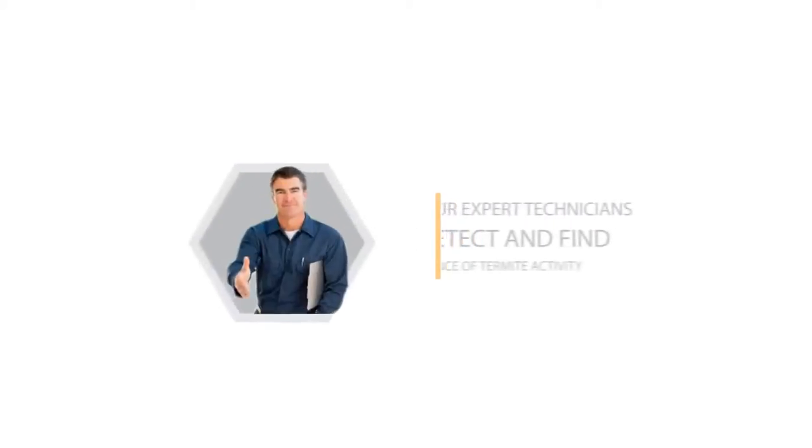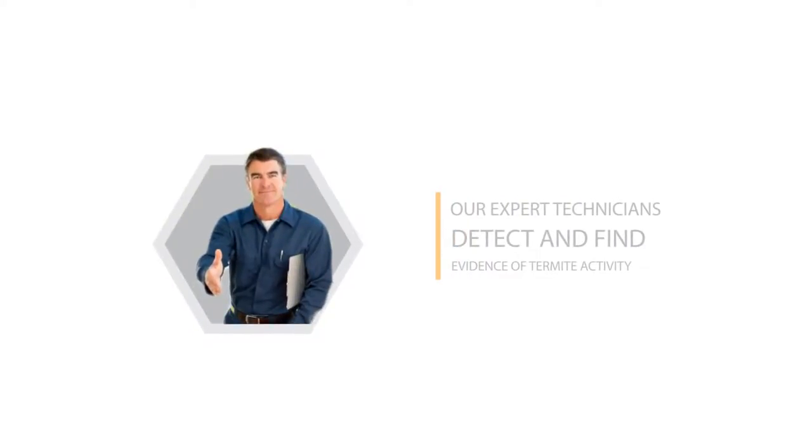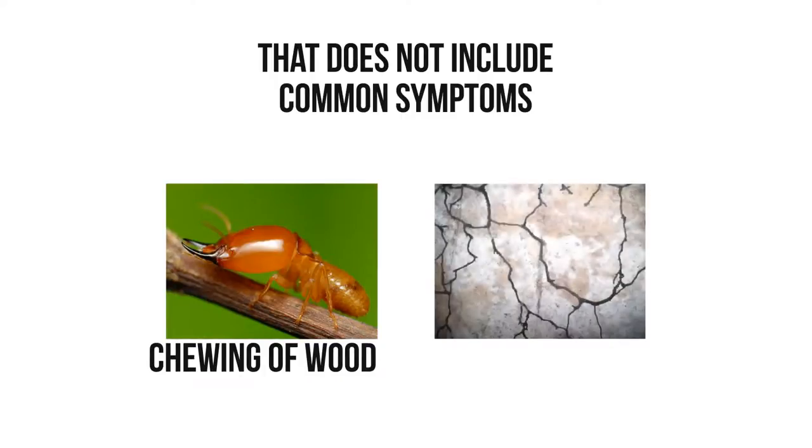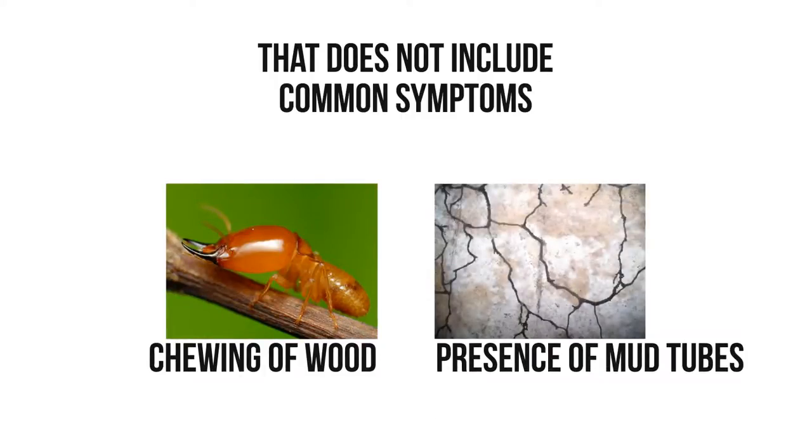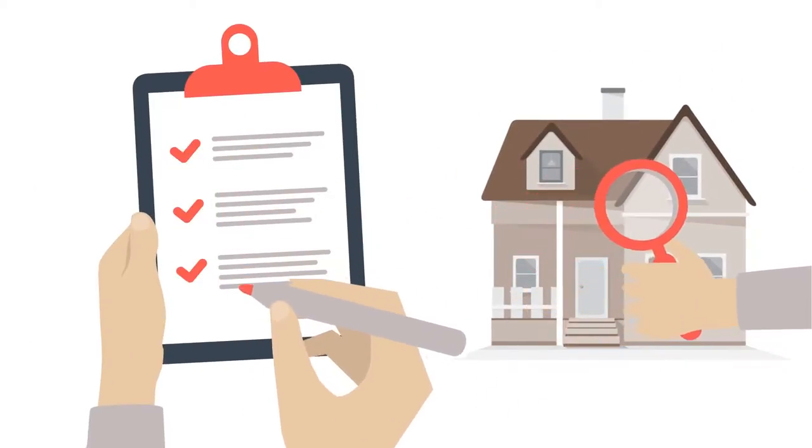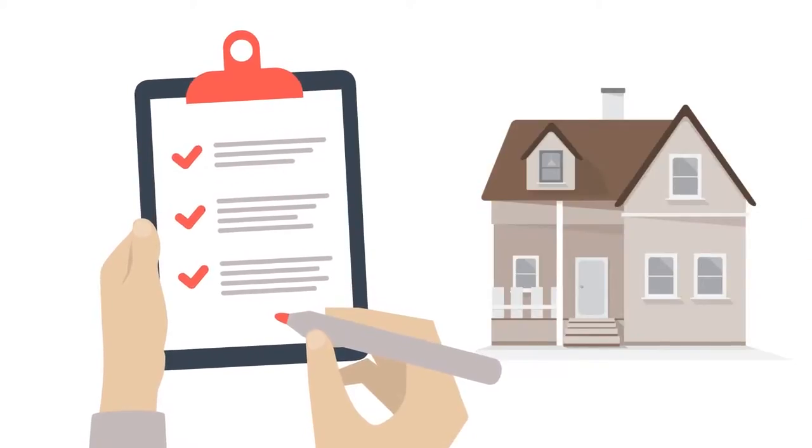Our expert technicians detect and find evidence of termite activity that does not include common symptoms like chewing of wood and the presence of mud tubes, which they need for shelter while navigating around. We conduct a thorough inspection and provide you with a complete report and suggested control options for your property.